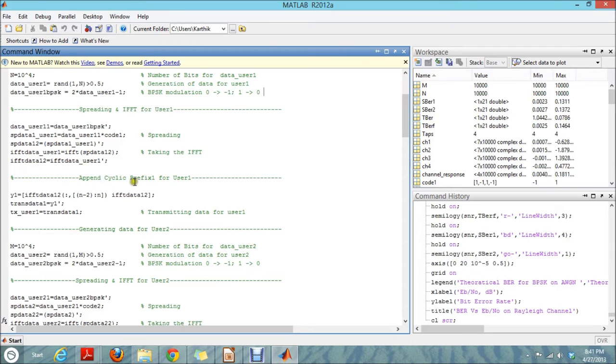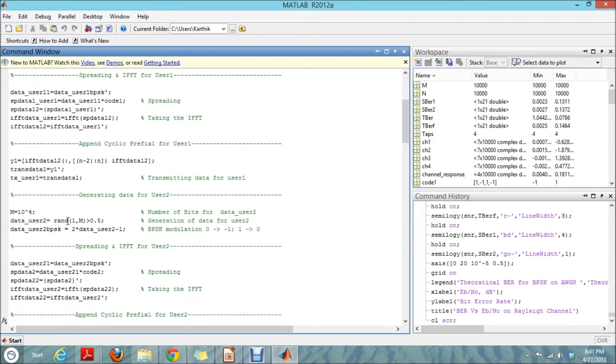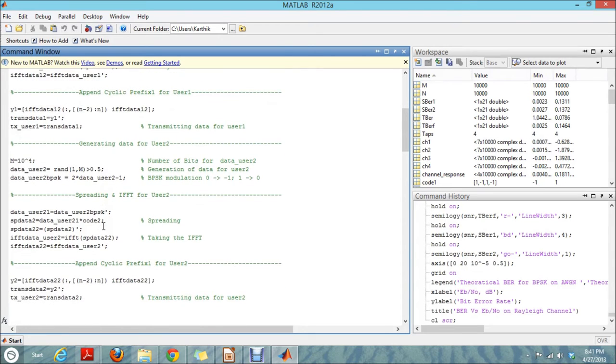Next we add the cyclic prefix. The cyclic prefix is usually added to combat inter-symbol interference. Then the transmitted data for user one is completely generated. And the same approach is followed again for user two.